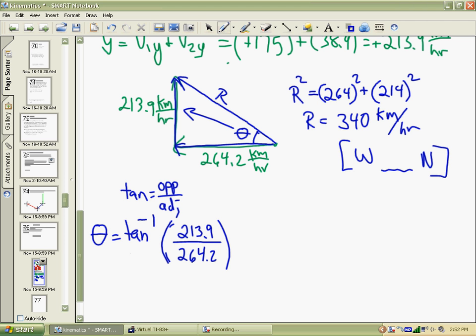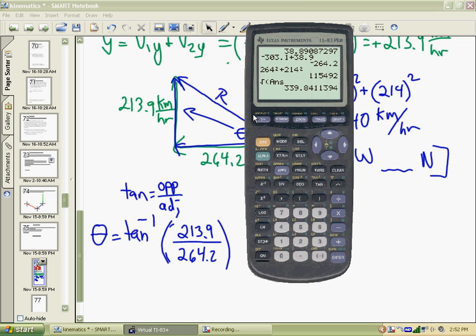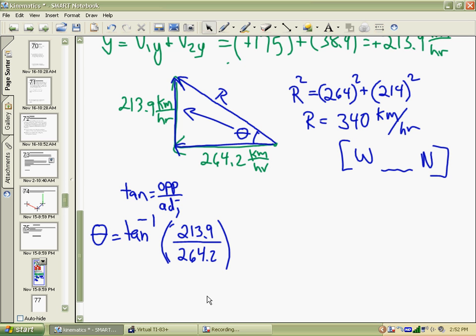And I have to take the inverse tan of that fraction to get the angle. So 213.9 divided by 264.2 gives us an answer. Inverse tangent of the answer gives us 39 degrees. So we know at 39 degrees west, 39 north, should be in our picture. This is the total of those two vectors that were added up. That was part A of the question.